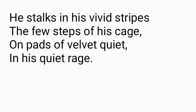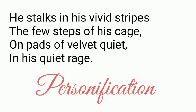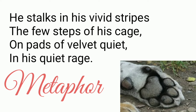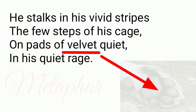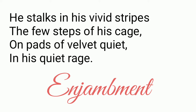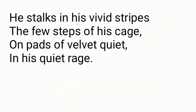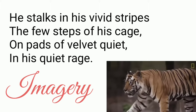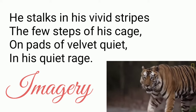The literary devices used in this stanza: first, the rhyme scheme is ABCB. Then there is personification — the tiger is personified; instead of using 'it,' the poet has used 'he' for the tiger. Another literary device is metaphor: the soft skin under the tiger's paw is compared to velvet. Then there is enjambment — a sentence continuing into the next line without any punctuation mark. The first line continues to the second line where there is a comma at the end. Then we have imagery, where the poet creates an image of a tiger walking in vivid stripes.